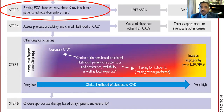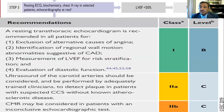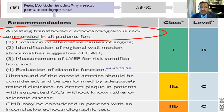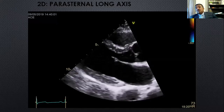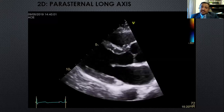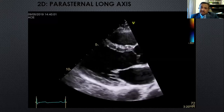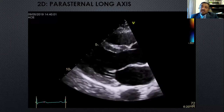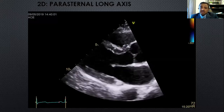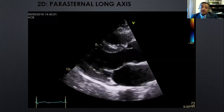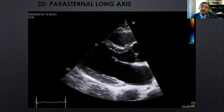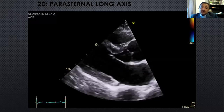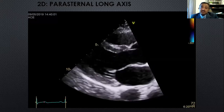Step three in the guideline is to perform basic testing — blood tests, ECG, chest X-ray. The guideline gives a class 1B recommendation for echocardiogram, mainly to rule out alternative causes of chest pain such as valvular heart disease, heart failure, and pericardial disease, and also to assess left ventricular systolic and diastolic function, and to look for cardiac tumors or pericardial effusion.